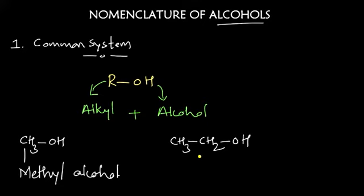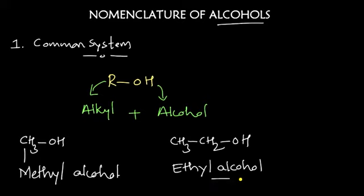Let's take one more example: CH₃CH₂OH. In this entire molecule there are only two carbons, so it is ethane. One hydrogen is replaced by OH, therefore it becomes ethyl plus alcohol — this is ethyl alcohol.